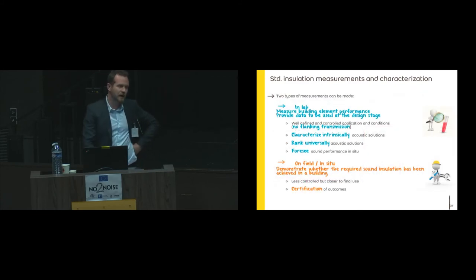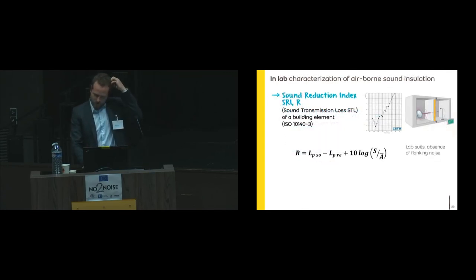You can do two types of measurements. The first one is in-lab. You measure the building element performance. It provides the data to be used at the design stage. It's clear that you don't have the flanking transmissions. It characterizes the acoustic solutions interestingly and enables the industrials to rank their solutions. You also have the on-field or in-situ measurements. Here you take into account the real installation, the real flanking transmission, and it's the insulation you're supposed to achieve. We do this measurement only when we have some problems, some issues, and we want to verify that the installation has been correctly done. In France, there's a new certificate that obliges the building constructor to verify that the acoustic implementation has been fulfilled.